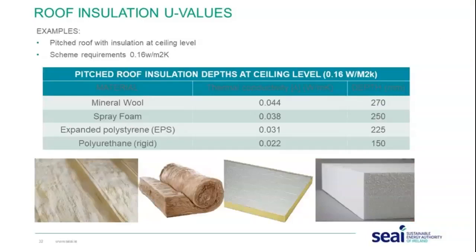For a pitched roof at ceiling level, the scheme requirement is 0.16. There are four different materials with different thermal conductivities, each requiring different depths to achieve that U-value. For example, mineral wool with a thermal conductivity of 0.044 would need 270 millimetres. As you move down to materials with lower thermal conductivities, the depth required decreases, giving a general outline of the different depths needed to meet the 0.16 U-value.